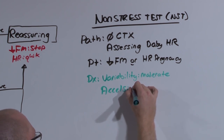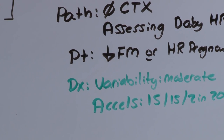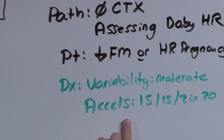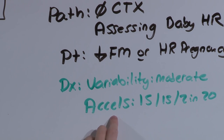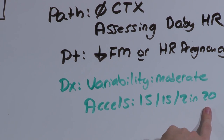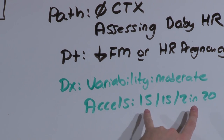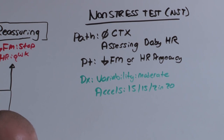In addition to variability, you're also looking for accelerations. What you want follows the 15-15-2-and-20 rule: increases in heart rate of 15 beats per minute, lasting 15 seconds, occurring twice in 20 minutes. This is the definition of an acceleration in a baby greater than 30 weeks. For a baby less than 30 weeks, it's the 10-10-2-and-20 rule.